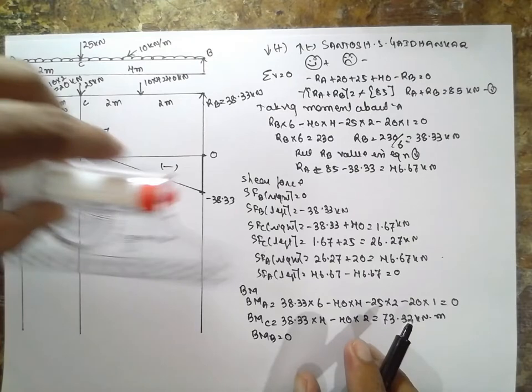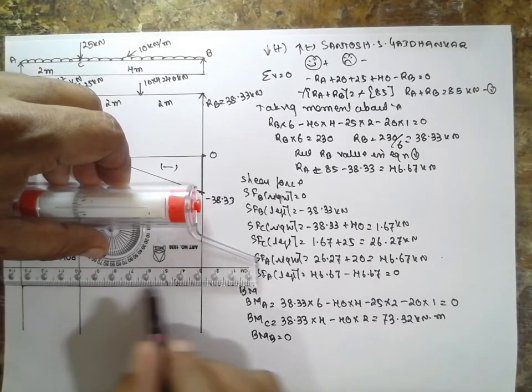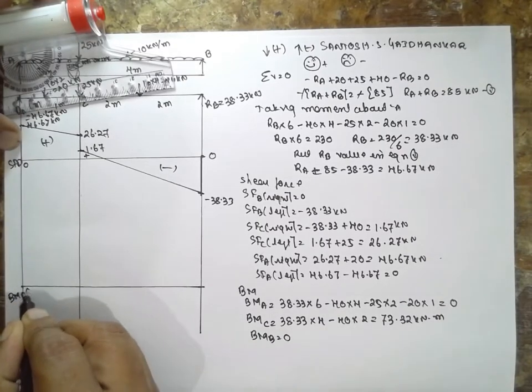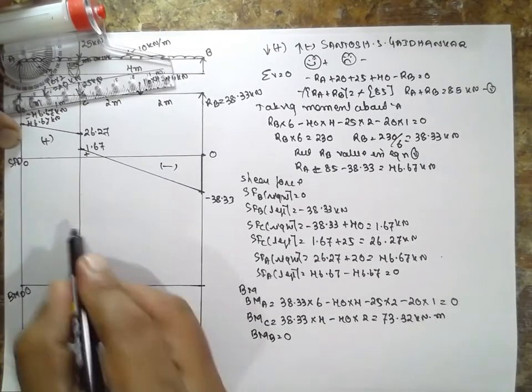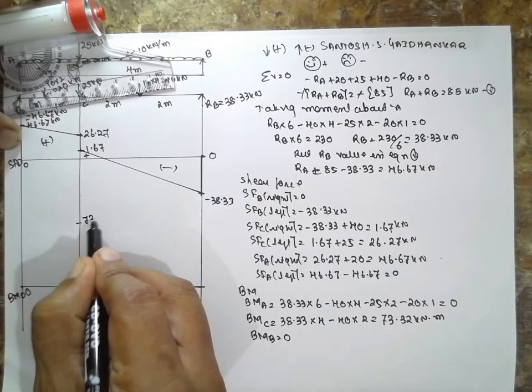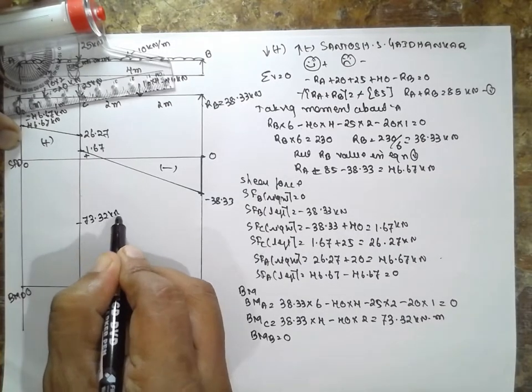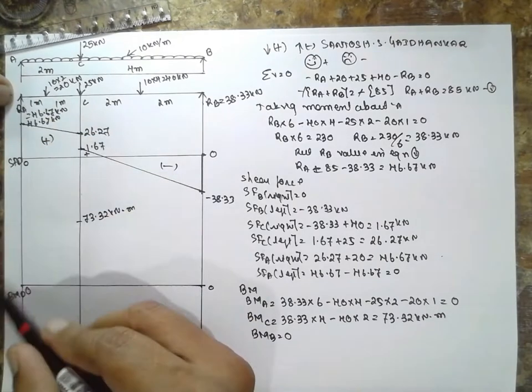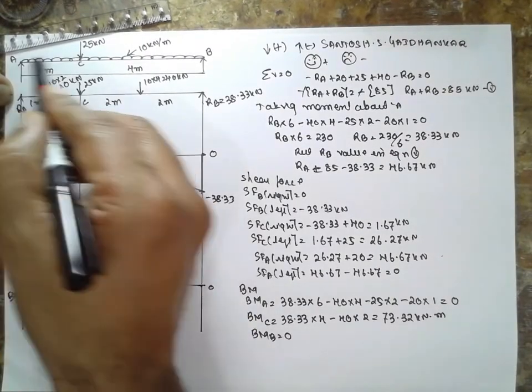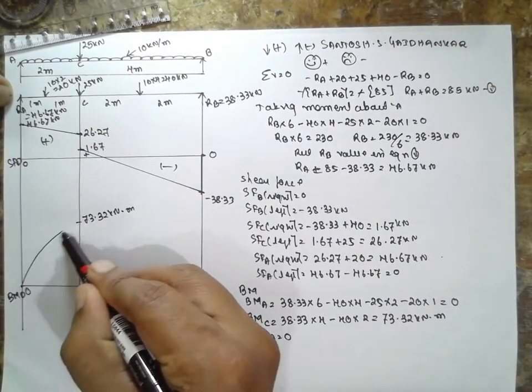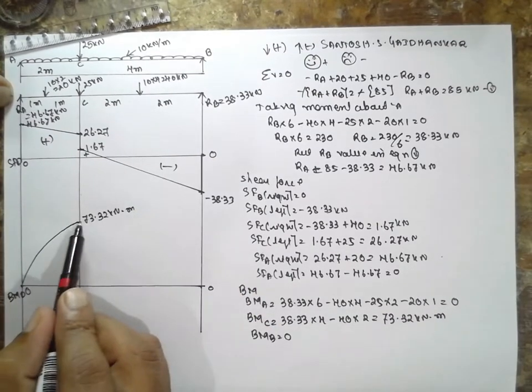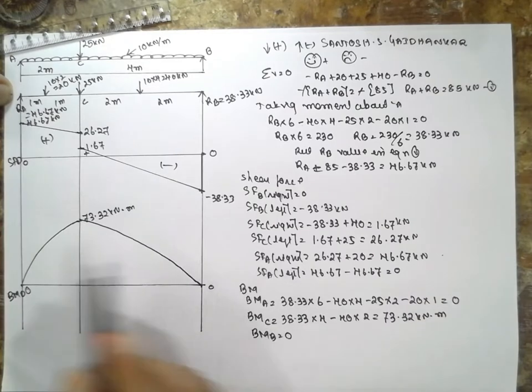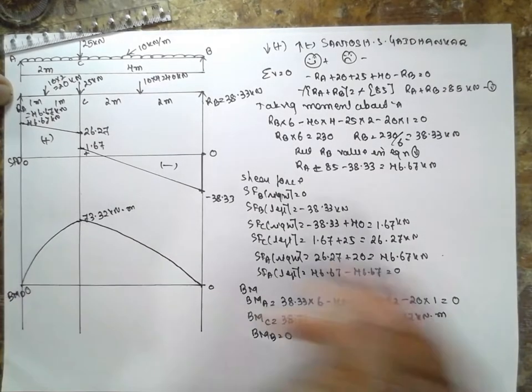Now draw the diagram. Bending moment first is 0, C is 73.32 kilonewton meter again it is 0. Because of this UDL you have to draw parabola.